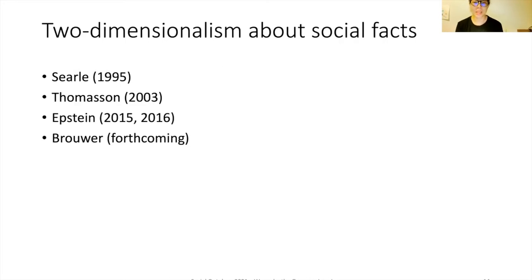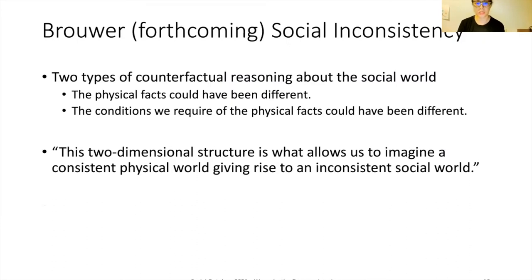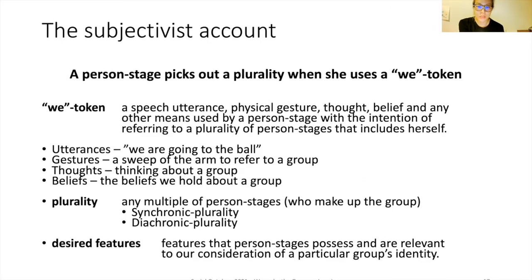Before going into my account proper, I'd like to introduce two-dimensionalism about social facts. The first prominent account was by Chalmers and then Thomason. The ones I will spend time on today are Epstein's anchoring-grounding model and Brown's forthcoming work on social inconsistency. Brown's work proposes that two types of counterfactual reasoning about the social world exist: the physical facts could have been different, or the conditions we require could have been different. This two-dimensional structure is what allows a consistent physical world to give rise to an inconsistent social world.